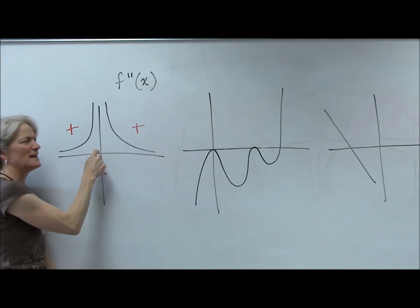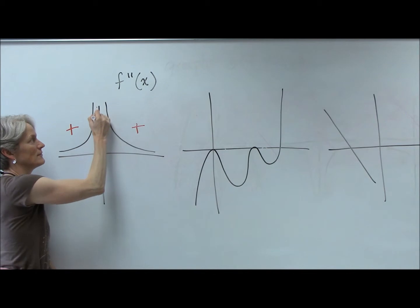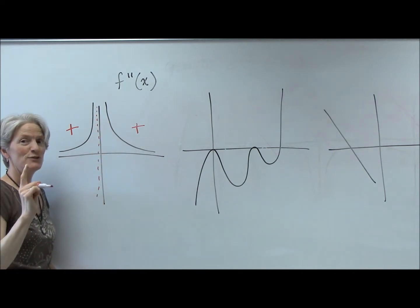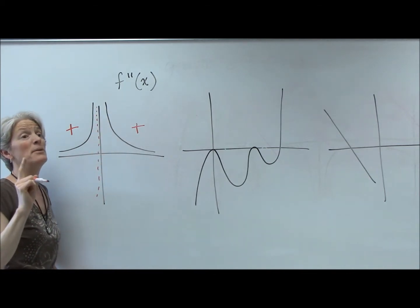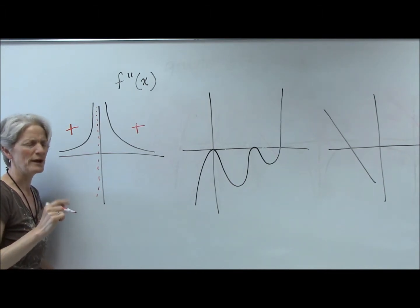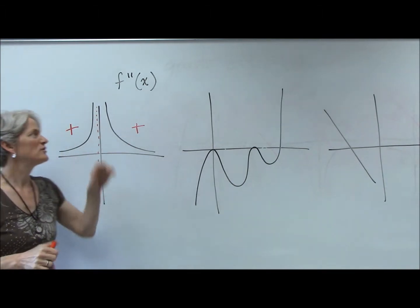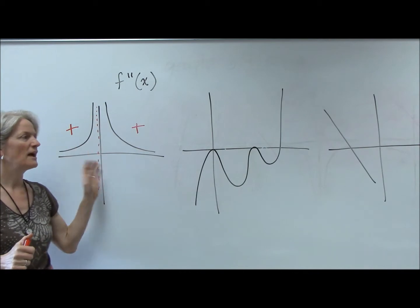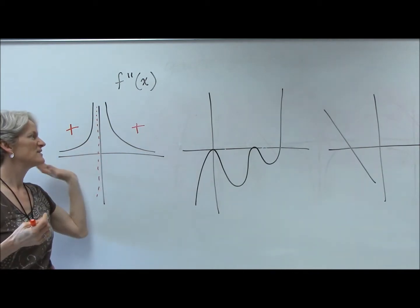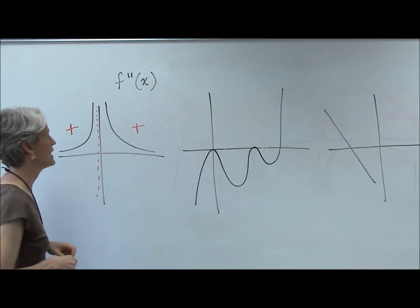And what's happening here? It would be undefined. So that is a potential inflection point. We're just assuming for our purposes that our function is defined for all real numbers for all of these.